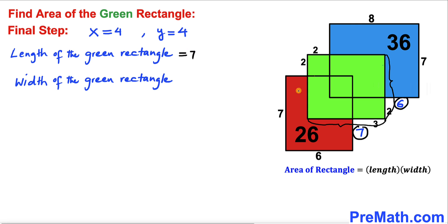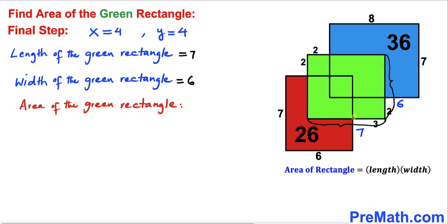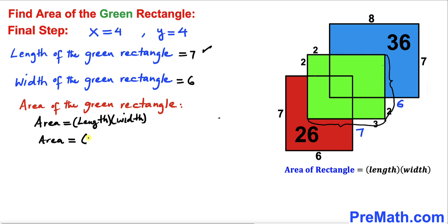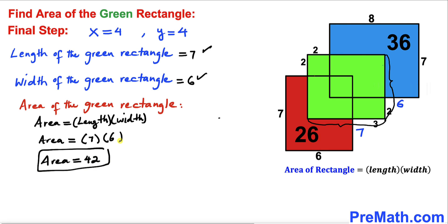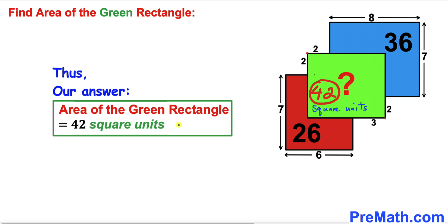The area of this green rectangle — applying the formula area equals length times width — is 7 times 6, so the area of this green rectangle turns out to be 42 square units.